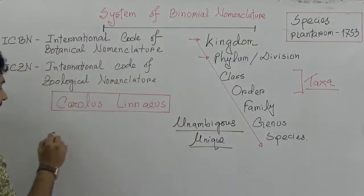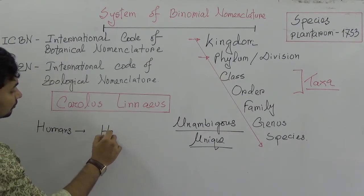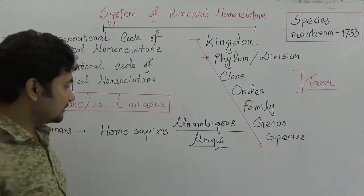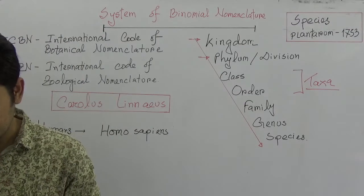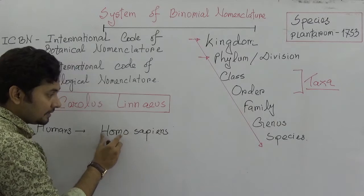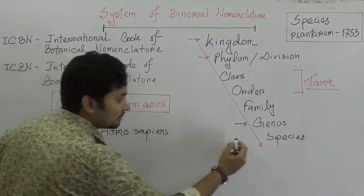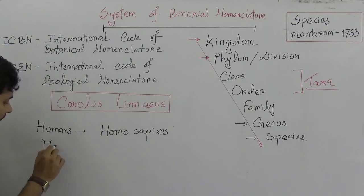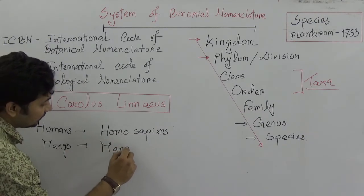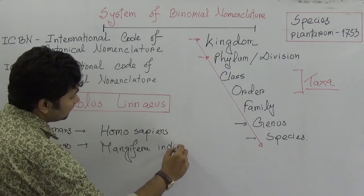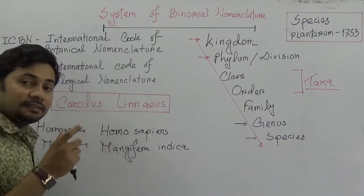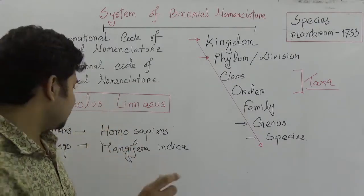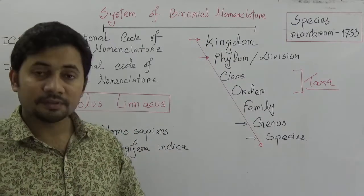For example, the binomial nomenclature of humans is Homo sapiens. The first part, Homo, refers to the genus, and the second part, sapiens, refers to the species — both are Latin words. In case of mango, it would be Mangifera indica. Since there are two parts, it is called binomial nomenclature.